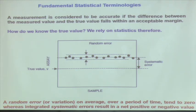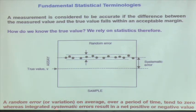Assay means how much is the percentage of that metal — that is what is the grade of my ore. That means I want to measure how much copper percentage is in my ore — that we call it assay. A random error or variation on average over a period of time tends to zero, whereas integrated systematic errors result in a net positive or negative value.